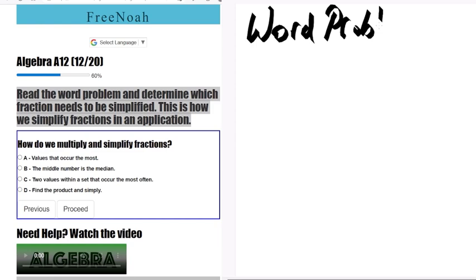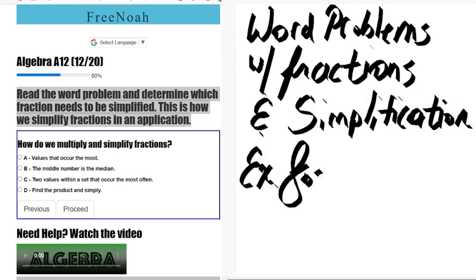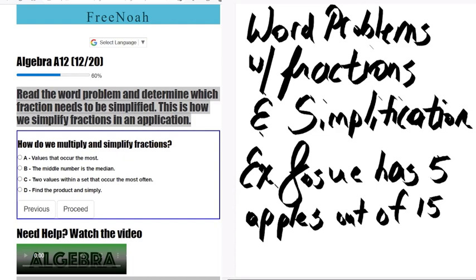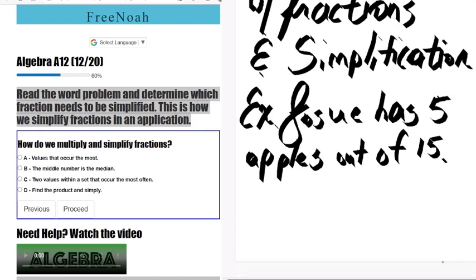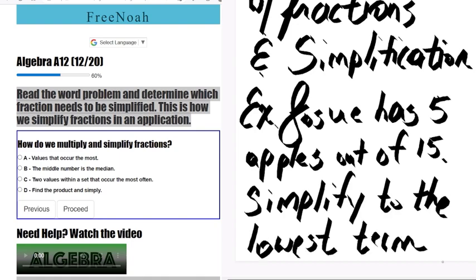We're going to write a word problem with fractions and simplification. For example: Jose has five apples out of 15. We're going to keep things simple here. Simplify to the lowest terms.